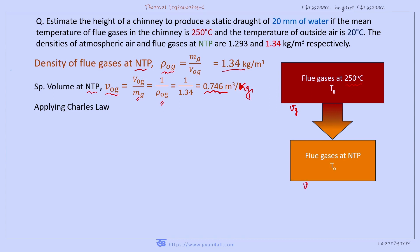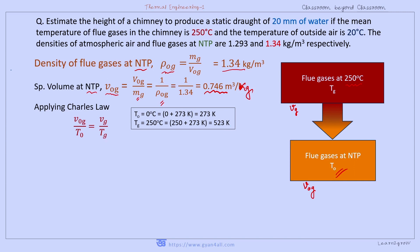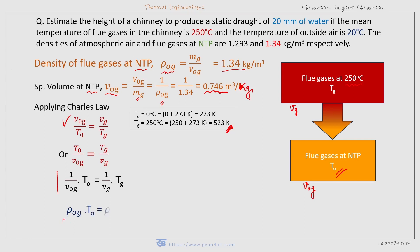The specific volume of the flue gas is v_G, and when reduced to NTP it becomes v₀_G. Applying Charles's Law: v₀_G/T₀ = v_G/T_G. The temperature of the flue gas T_G is 523 K. Rewriting: T₀/v₀_G = T_G/v_G, which gives ρ₀_G·T₀ = ρ_G·T_G. T₀ is 273 K and T_G is 523 K, so we can now find ρ_G.